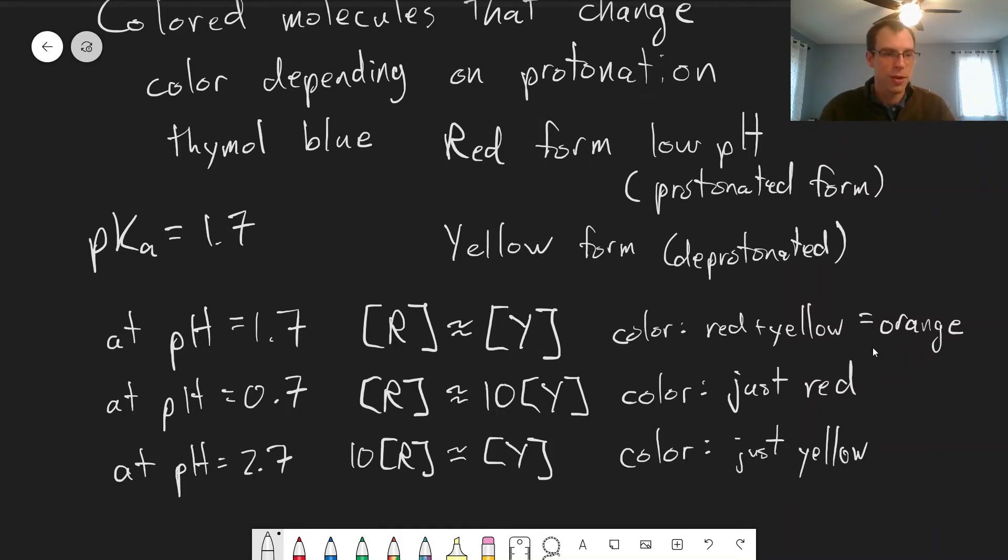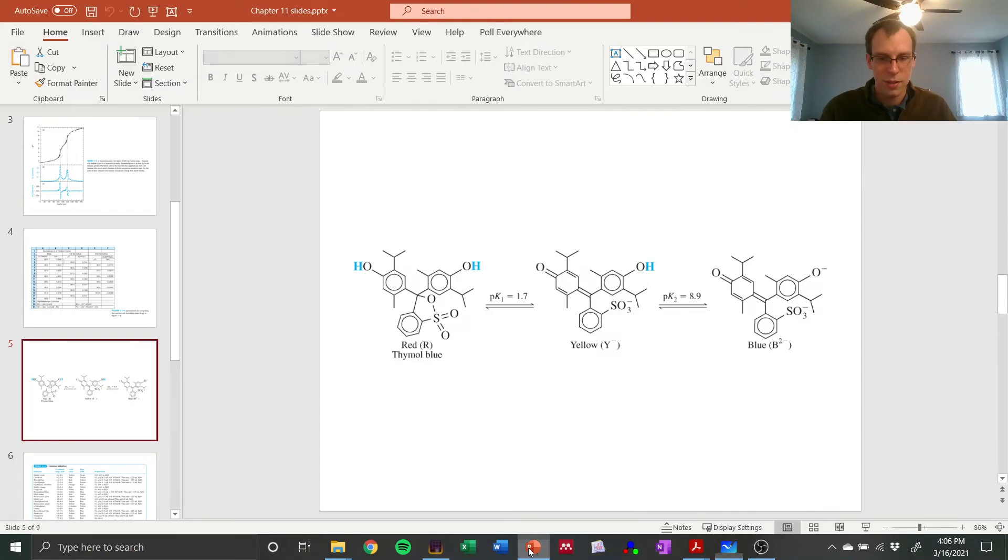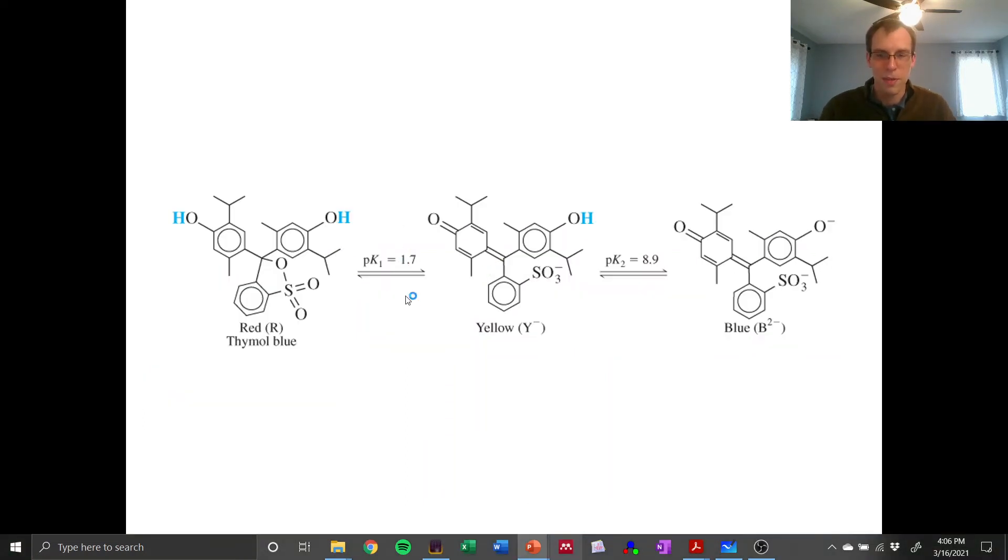Now we need to match the indicator we use with the expected range of pH for our titration. So I'm going to switch over to PowerPoint here. This is our thymol blue, and this is actually what the different forms look like. So here's our pK 1.7.